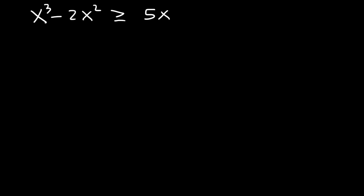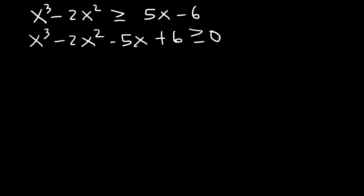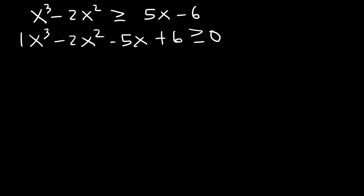Let's work on one more problem: x cubed minus 2x squared is greater than or equal to 5x minus 6. Move everything to the left side and then factor. We can't factor by grouping, so we need to use the rational zero theorem to list possible rational zeros. Factors of 6 are 1, 2, 3, and 6, and the leading coefficient is 1. Let's plug in numbers to see which gives zero, then use synthetic division to find the other zeros.